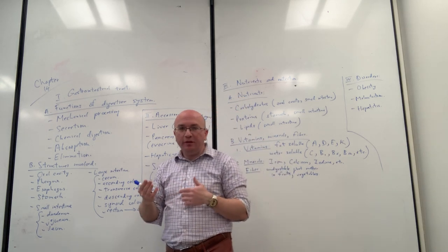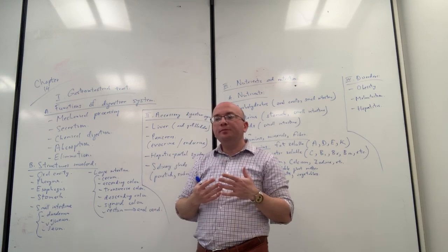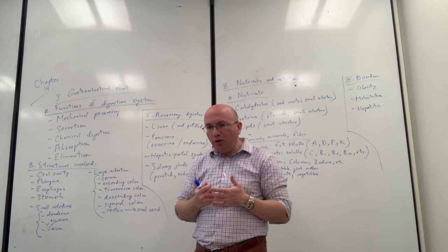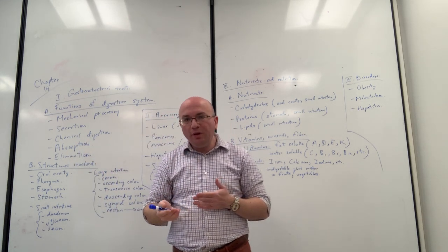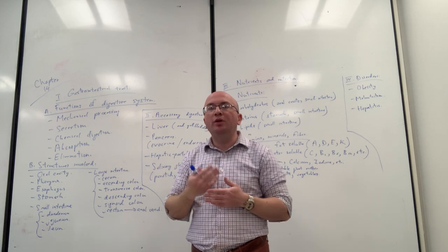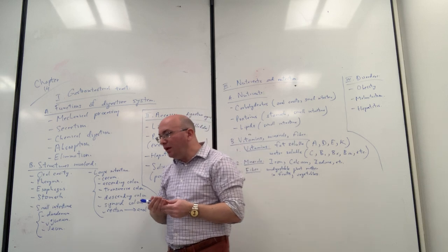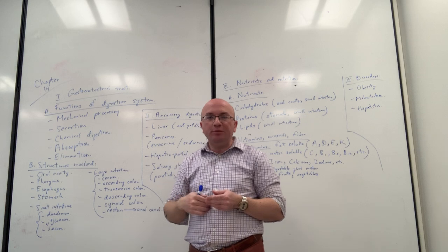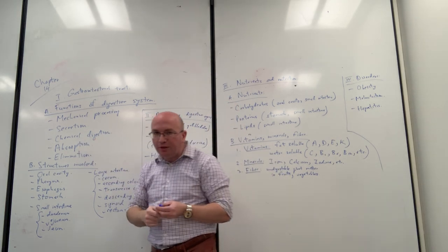When we think of secretion, we're thinking about secretions of things like saliva, enzymes, or other molecules to help break down the food. Saliva mixes with the food to make it easier to break down and swallow. For chemical digestion, it's similar — enzymes mix into the food to help break down nutrients into smaller molecules, something that happens early on in the oral cavity but especially in the small intestine and stomach, where most chemical digestion takes place.